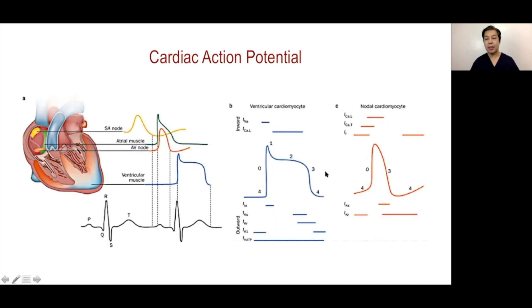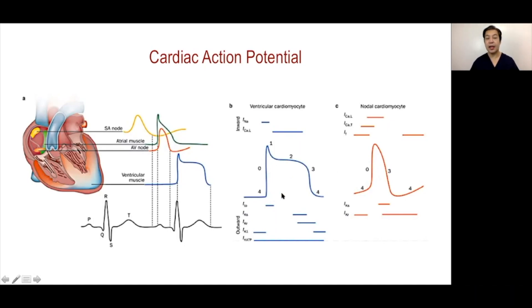There are marked differences between the two action potentials. Instead of five phases, the conduction tissue action potential has only three: phase zero, phase three, and phase four. Phase zero — the rapid depolarization — is not as rapid as we see in the cardiac myocyte.